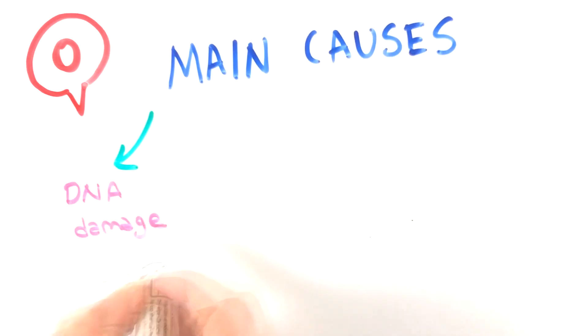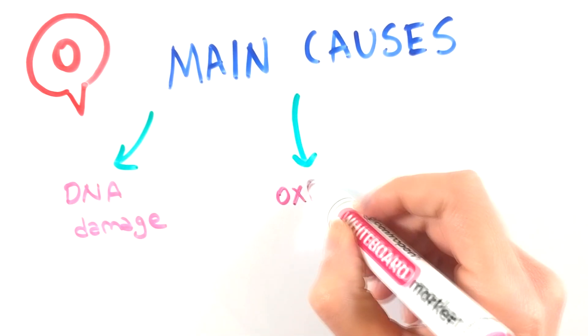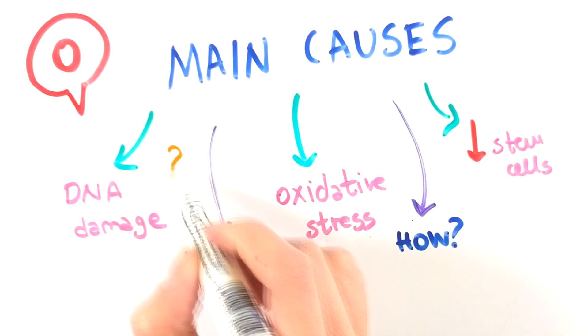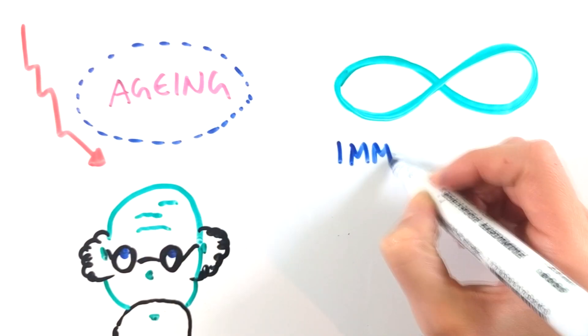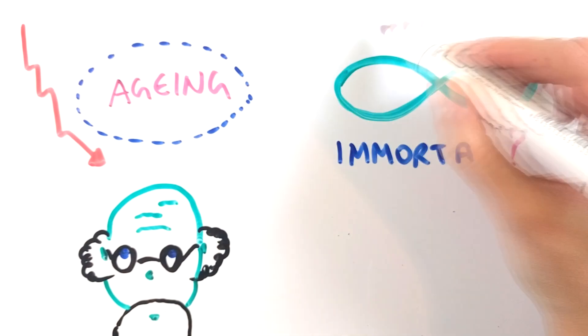In this video we pointed out some of the main causes of the aging process. There are a lot of mechanisms that are yet to be discovered that will help us to understand better why and how do we age. So it is only a matter of time before we can significantly slow down aging. But will we ever become immortal?